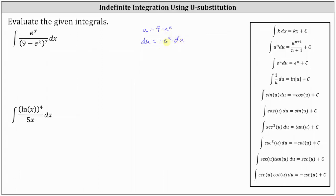Notice we don't have negative e to the x times dx as part of the integral — we just have e to the x times dx. Therefore we'll divide both sides by negative 1, which gives us negative du equals e to the x dx. So now we can substitute u for 9 minus e to the x, and substitute negative du for e to the x dx.